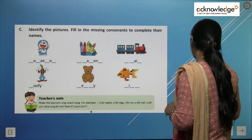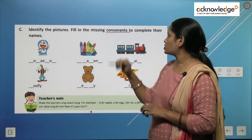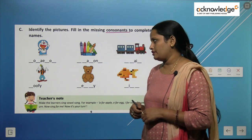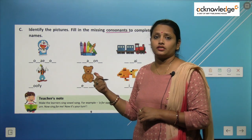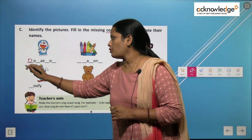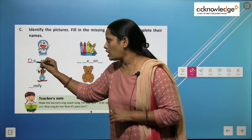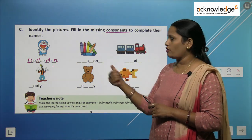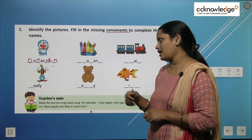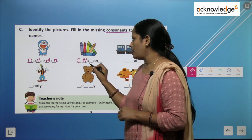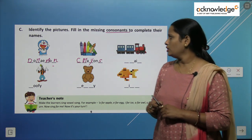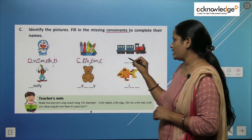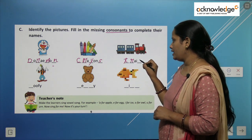Now we are going to learn about consonants by filling in the missing consonants to complete the names. First, a very famous cartoon character you see on television every day — it's Doraemon, D-O-R-A-E-M-O-N. Next, something we use daily in artwork — crayons, C-R-A-Y-O-N-S. And something we can travel in from one place to another with many bogeys — it's a train, T-R-A-I-N.